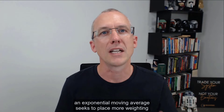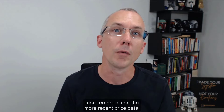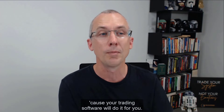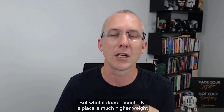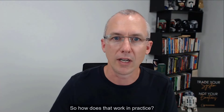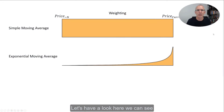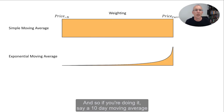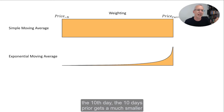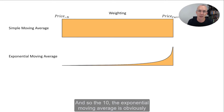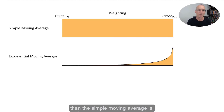An exponential moving average seeks to place more weighting, more emphasis on the more recent price data. The calculation of the exponential moving average is much more complicated — you don't have to do it by hand because your trading software will do it for you. What it does essentially is place a much higher weight on the current data point and decreasing weight on each of the previous data points. We can see the exponential moving average has a much higher weighting on the most recent price, and then each historical price gets less and less weighting all the way back. So for a 10-day moving average, the 10th day prior gets a much smaller weighting than the current price.